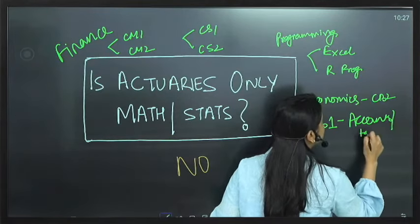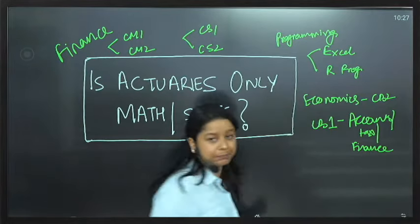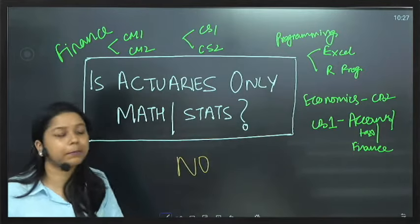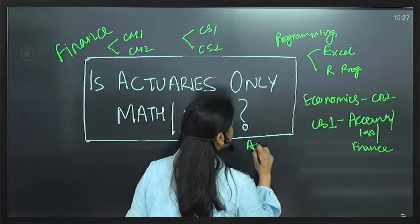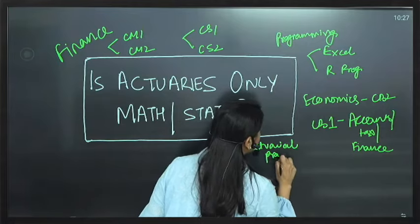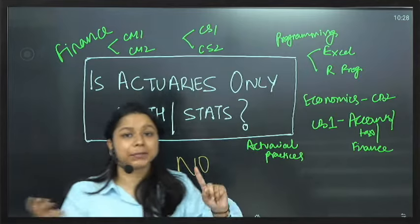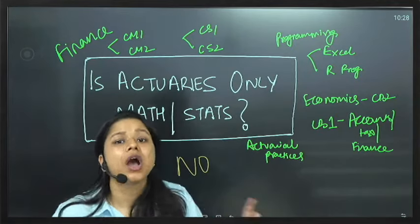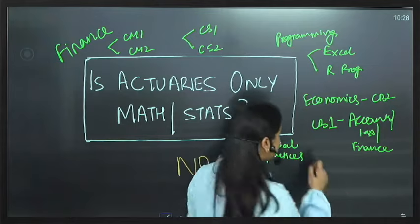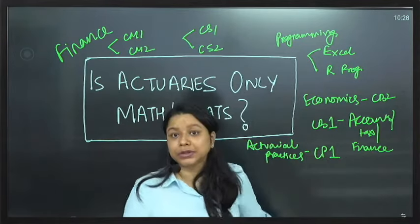And then after this we will be again talking about different actuarial practices, the concept of how a life insurance company, general insurance company, health, pensions, and investments work, and what is the entire actuarial control cycle in paper CP1. Are we only limited to these? No.